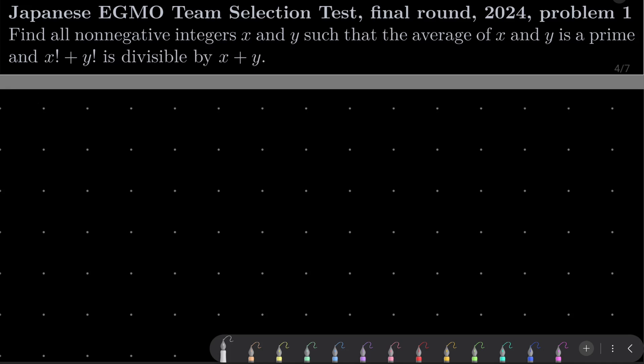We wish to find all non-negative integers x and y such that the average of x and y is a prime, and x factorial plus y factorial is divisible by x plus y.